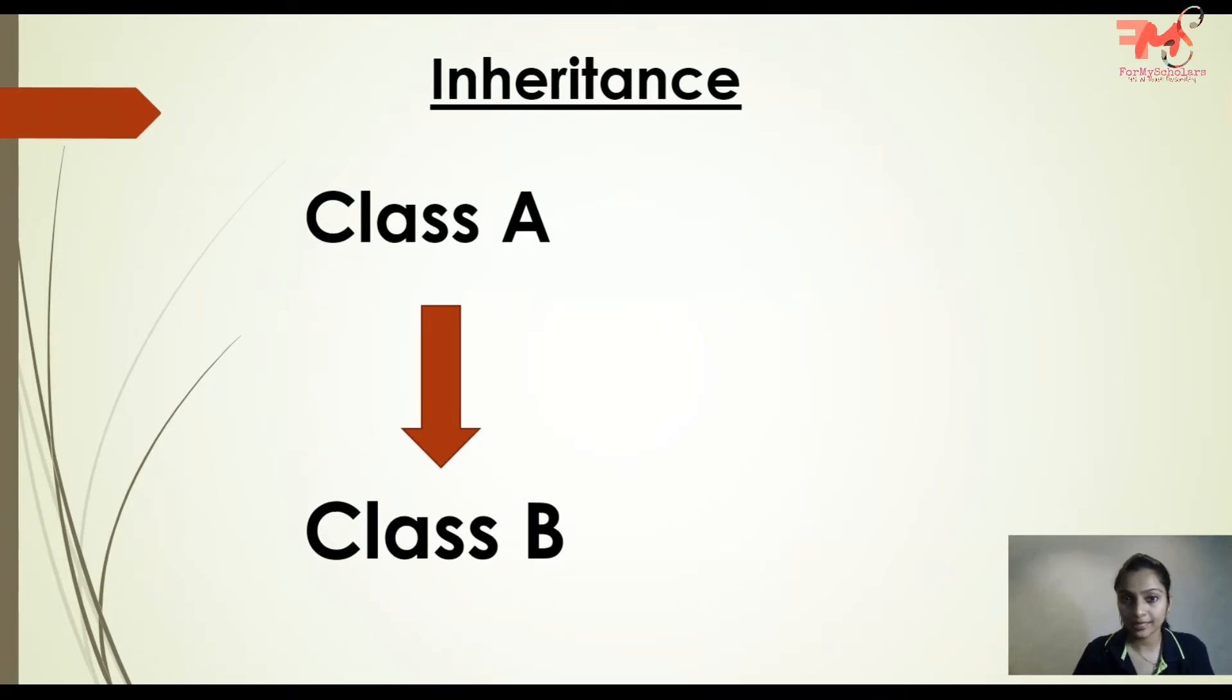So the same concept is here. Class B is using the properties of class A. So this concept is called inheritance. The basic advantage of this concept is reusability of the code. Class B doesn't need to write that code again; it can use the code of A.